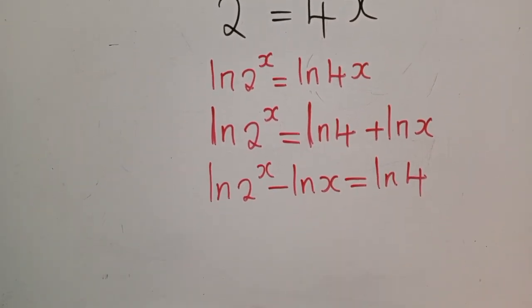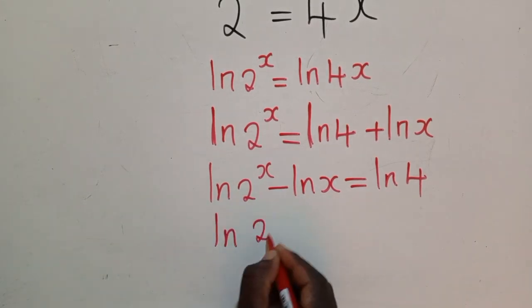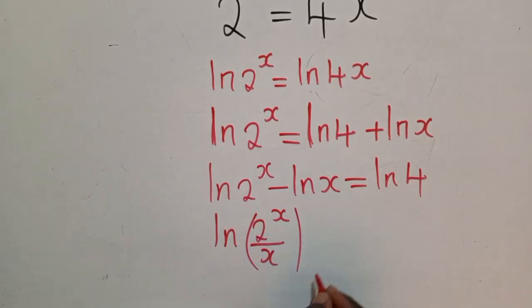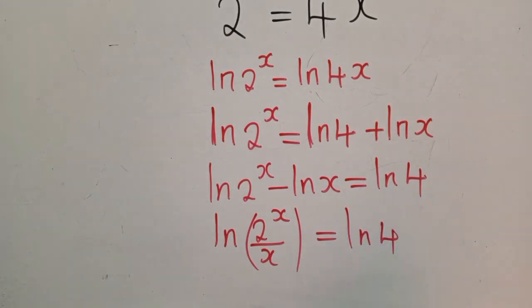So now, applying the property here, I will have ln of 2^x over x, like that. Which is equal to, this side, it will also be ln of 4.